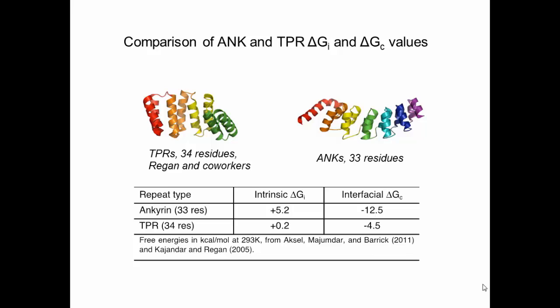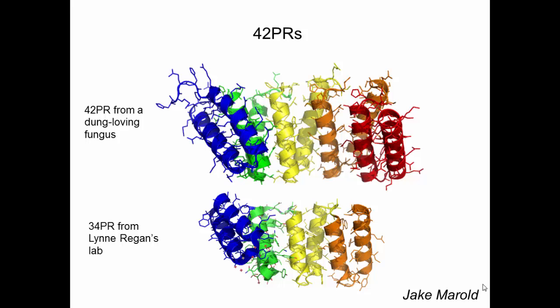We've undertaken a number of studies, one of which uses an interesting class of proteins that Jake Merrill, a graduate student in my lab, has found. These are like TPRs but have longer alpha helices. Shown here is a crystal structure of one of these proteins that Jake just produced. You can see it looks very similar to the TPRs, but it has longer helices. This provides an excellent platform for learning about differences that structural changes give to cooperativity, and we're working on that problem now along with other types of repeat proteins, finding interesting differences and trying to correlate them to structure.